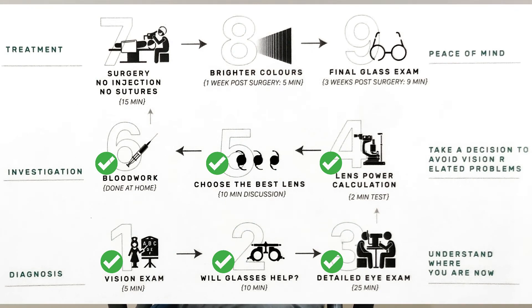Once the date is scheduled, we move on to the third phase — the treatment stage. You come in on the day of surgery and we perform the surgery. A few days after surgery, you will notice that your vision is clearer and colors look brighter — colors will appear in their real form rather than blurred or dimmed-out shades. Three weeks after cataract surgery, you will undergo a final glass power examination.